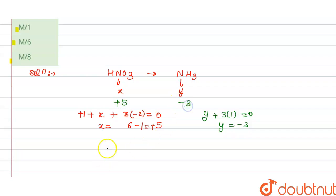So n factor is change in oxidation state: five minus minus three, that is five plus three, so this will become equals to eight.